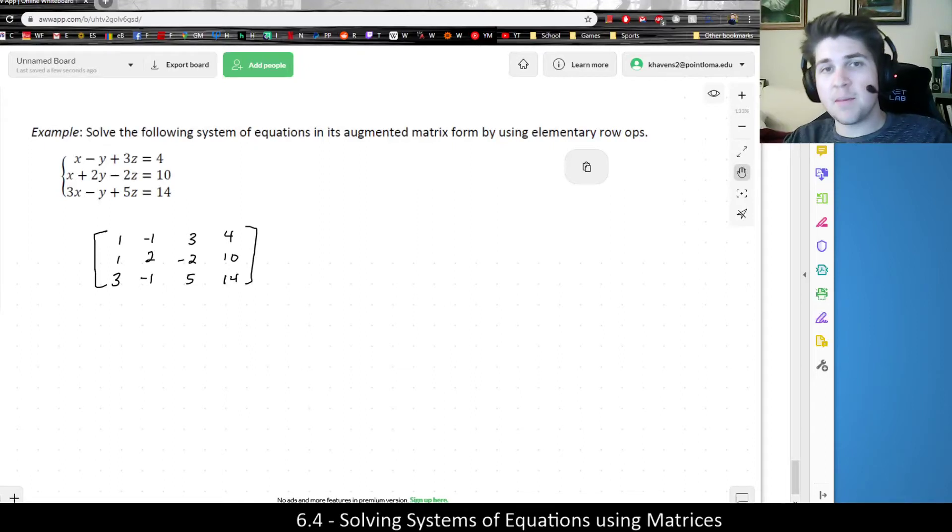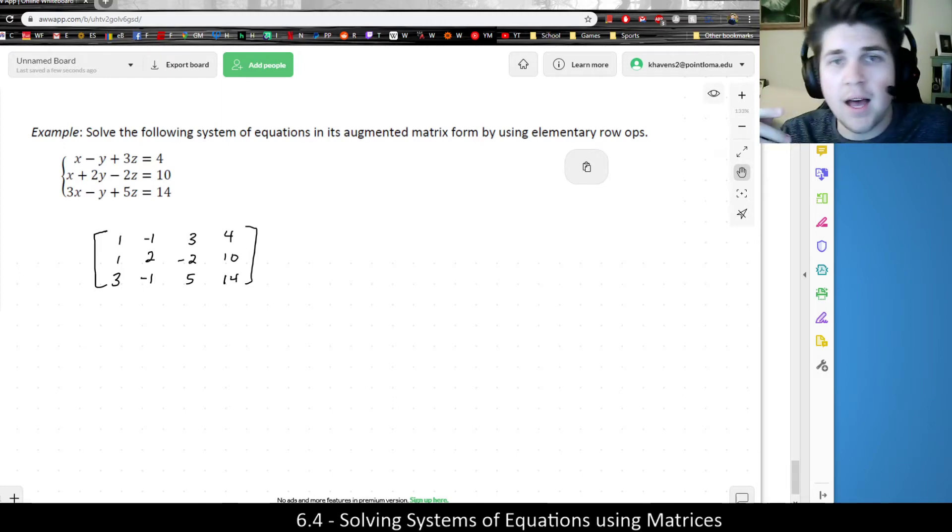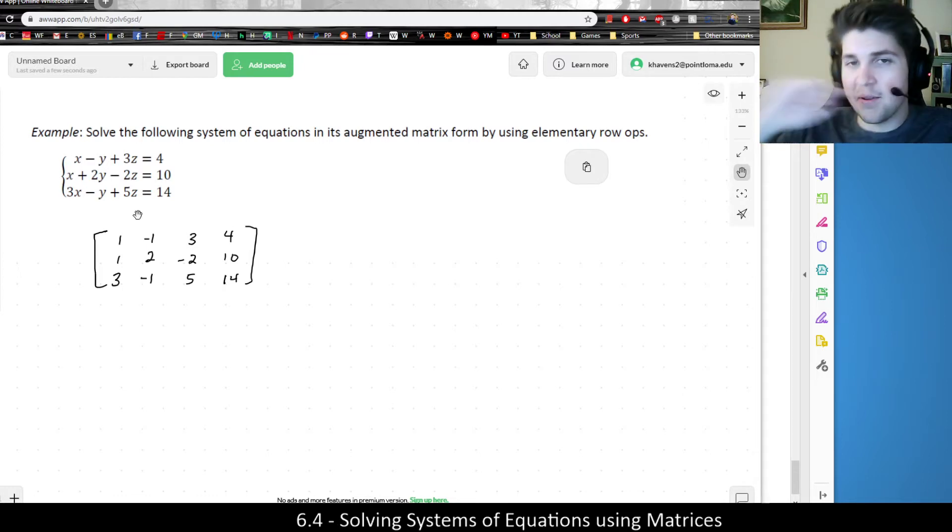In this video, I'm going to do another example of solving a system of equations using Gauss-Jordan elimination, or in other words, taking an augmented matrix and turning it into reduced row echelon form by putting zeros in those triangular spots as previously indicated.